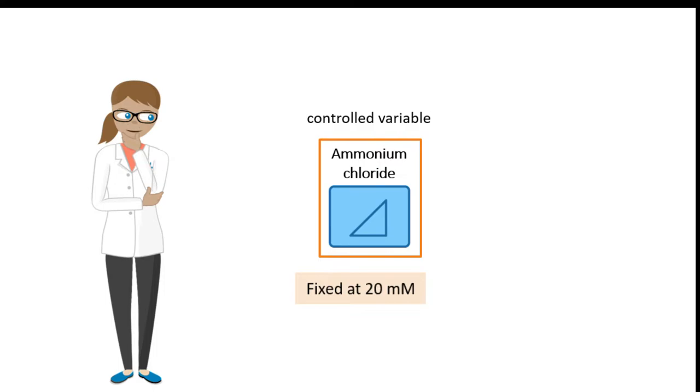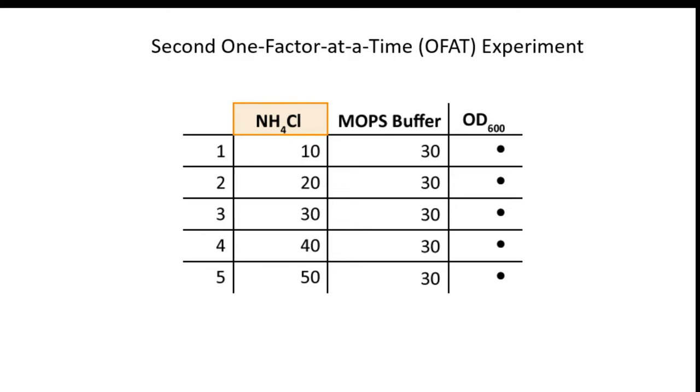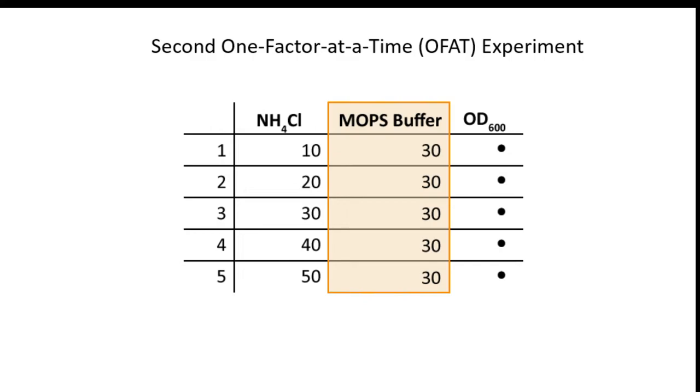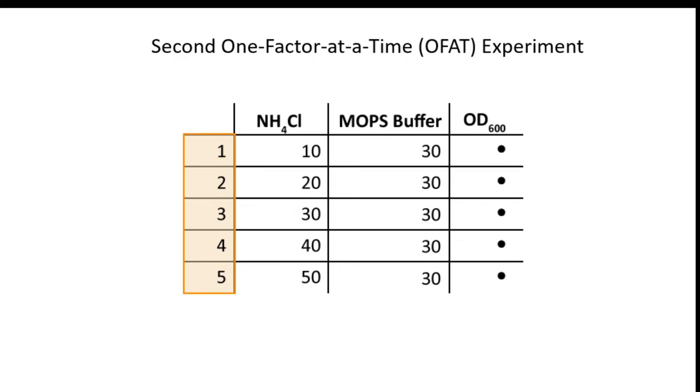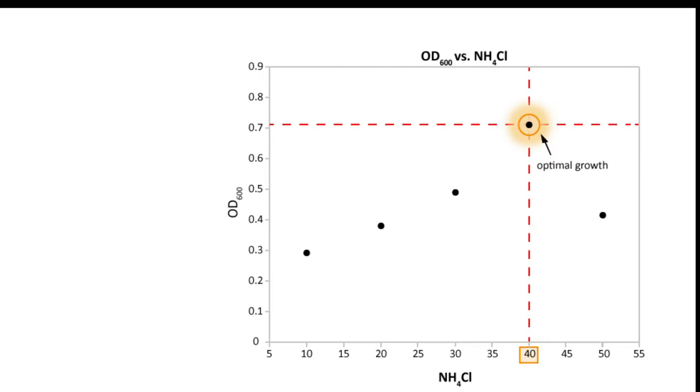But what about ammonium chloride? The concentration for ammonium chloride also ranges from 10 to 50 millimolars. Anna decides to run a second OFAT experiment to find the optimal concentration of ammonium chloride. For this experiment, Anna varies ammonium chloride concentration with MOPS buffer concentration fixed at 30 millimolars. Anna conducts another set of five trials where she increases the amount of ammonium chloride by 10 millimolars. Anna discovered that maximum growth is obtained when ammonium chloride concentration is 40 millimolars.